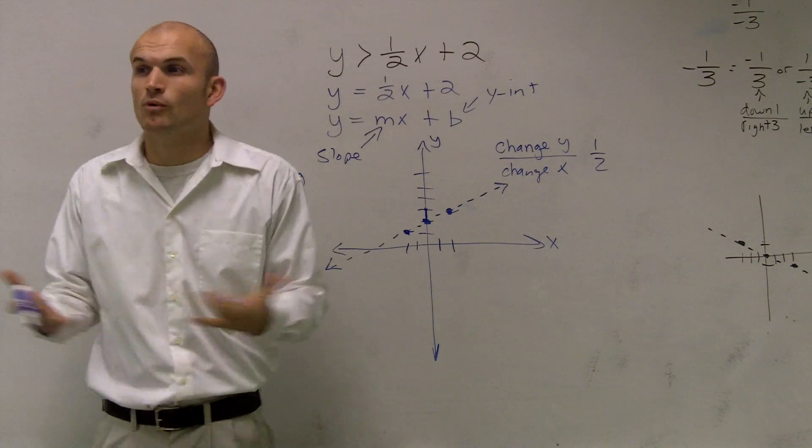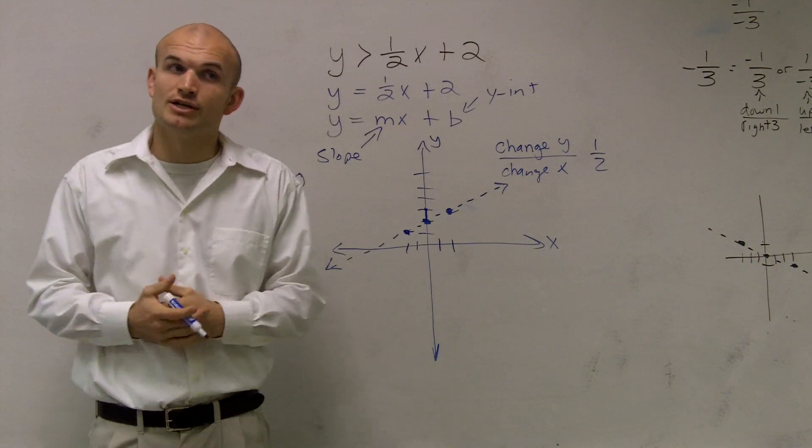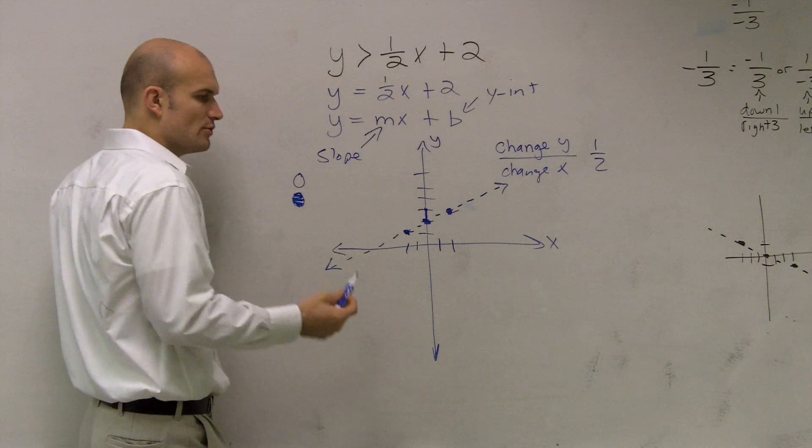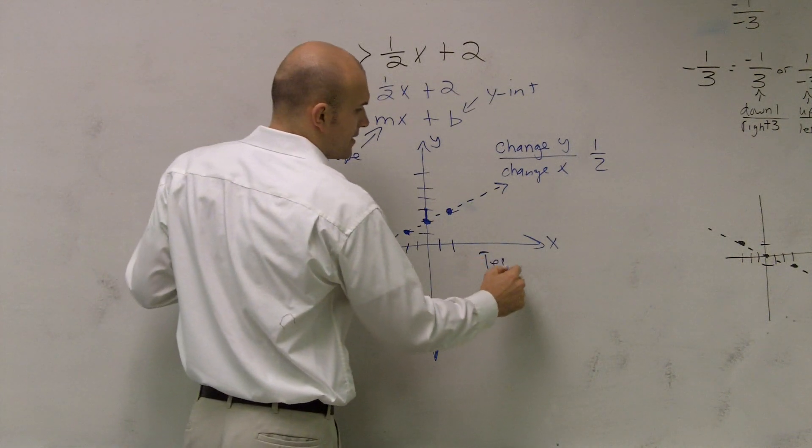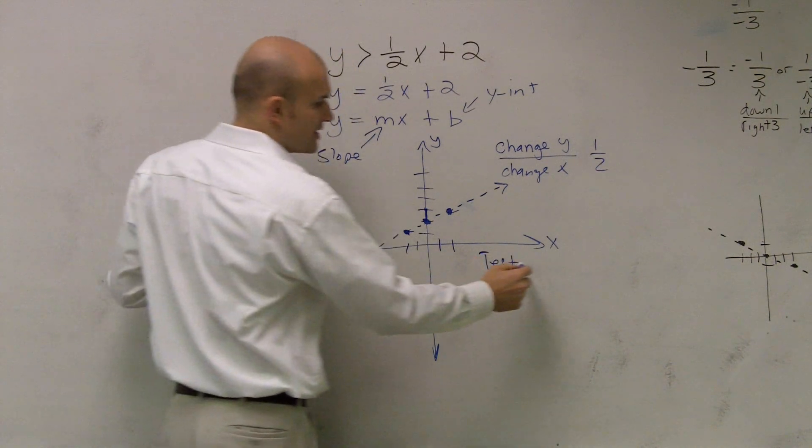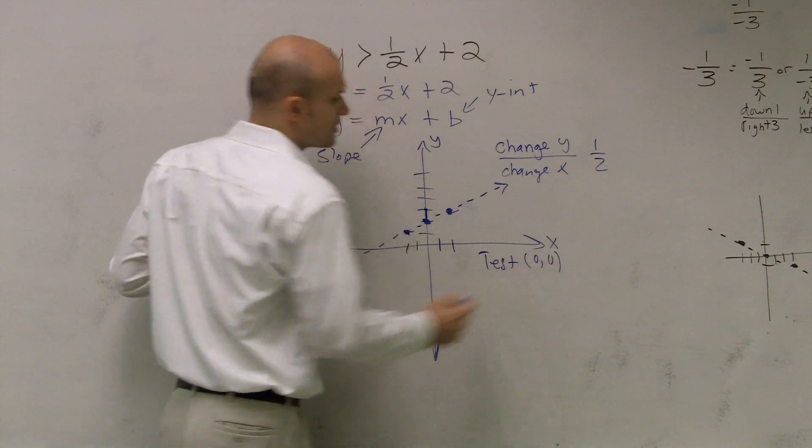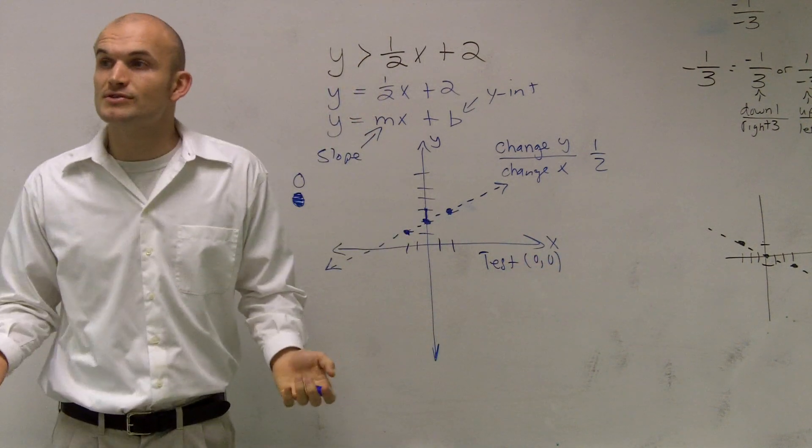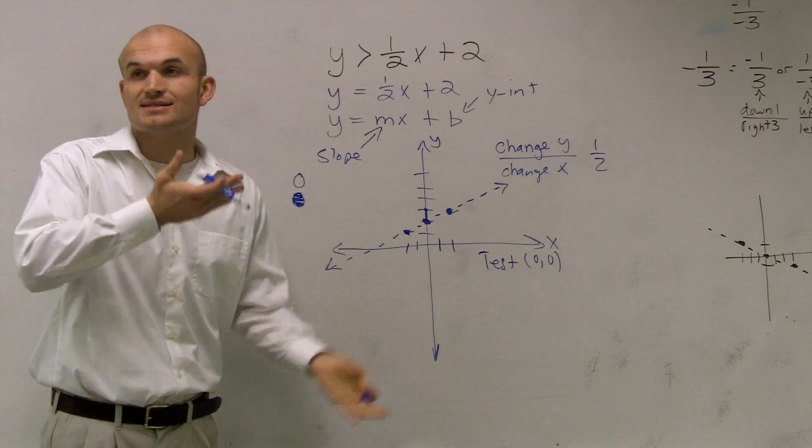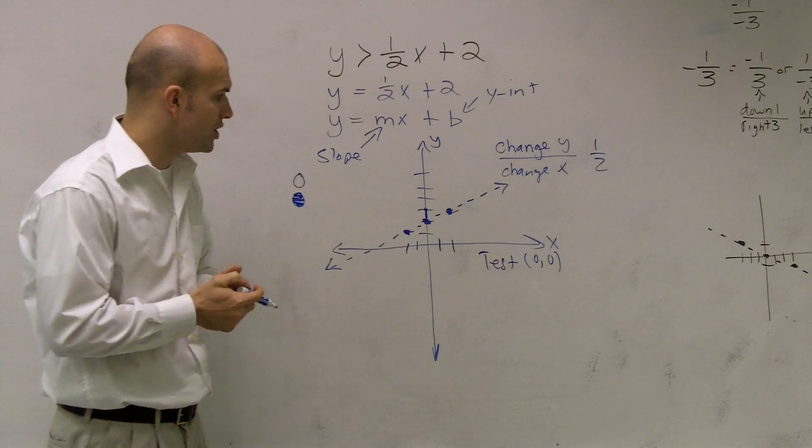So the last thing we need to do is, now I need to determine, well, what points are going to make this inequality true? So we need to pick a test point. And the best test point I can tell you guys to pick is 0, 0. The only time we don't want to use 0, 0 is when the graph goes through 0, 0. Because then that doesn't tell you where do you shade above or below.